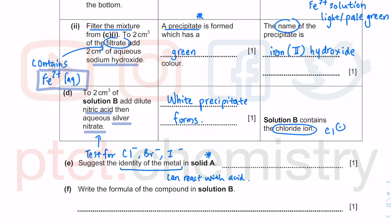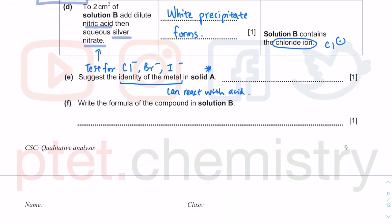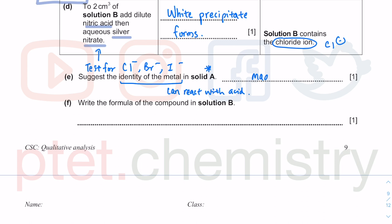State the identity of the metal in solid A. It can react with acid, but we are doing a test tube reaction. Do not go for sodium and potassium—these are very dangerous, very explosive, very violent reactions with acid. We don't do it in a test tube. You can choose any of these metals that can react with acid, perhaps not aluminium because it's protected by aluminium oxide protective layer. You could have gone for magnesium, zinc, or calcium—sensible reactive metals, but not too reactive.